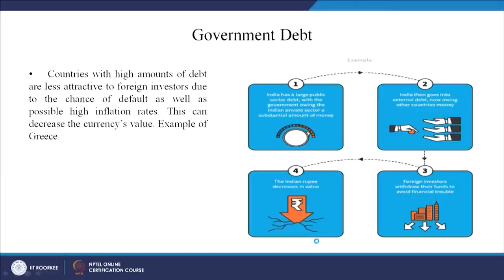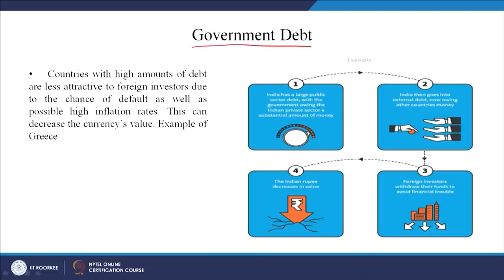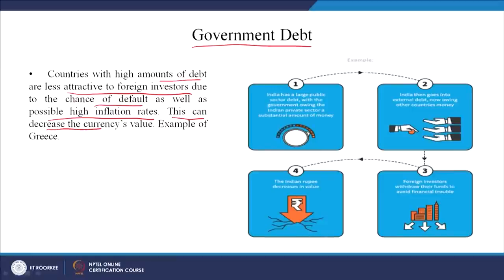Another point that affects the foreign exchange is the government debt - how much debt the government is having. Some countries have largely been dependent on debt, for example Greece. Countries with high amounts of debt are less attractive to foreign investors due to the chance of default as well as possible high inflation rates. Through debt, when you have got the money, it is possible that you may not be able to pay back. When you default, that is a dangerous sign. Today if you look at India's NBFC problem and the banks' issues, you will understand what the problem of debt is and how it had a seriously adverse effect on the Indian economy.